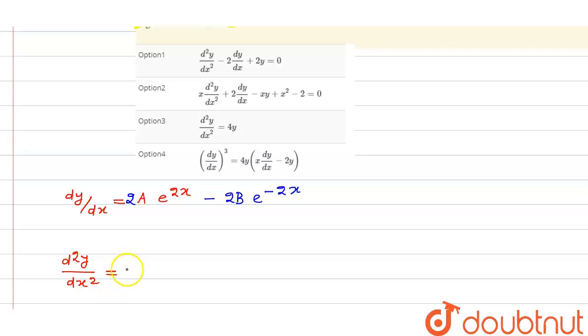It will be 4a e to the power 2x, then this again positive, this is 4b e to the power minus 2x. So it will become 4, if I take 4 common, so that is 4 into a e to the power 2x plus b e to the power minus 2x.